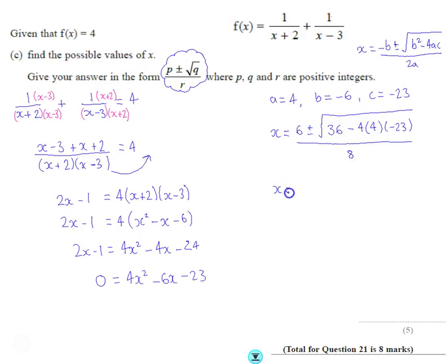So what I get is, if I just simplify slightly, I get 6 plus or minus, if I work this out, this bit's going to be a positive, so it's going to add to 36, so it's the square root of 404, all divided by 8.